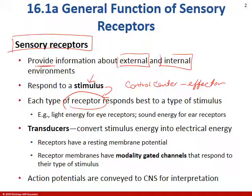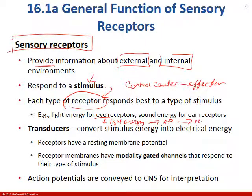Some of these senses, like vision or hearing, are going to be really complicated. Basically with the eye, we're taking light energy and turning it into an action potential. That action potential is going from the retina to the brain, and then we have to perceive what it is that we just saw.